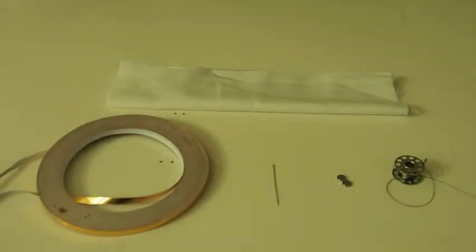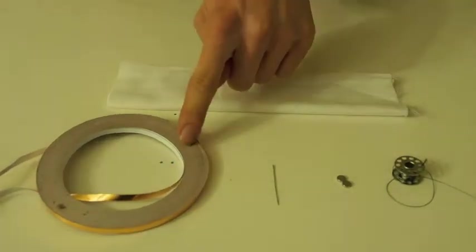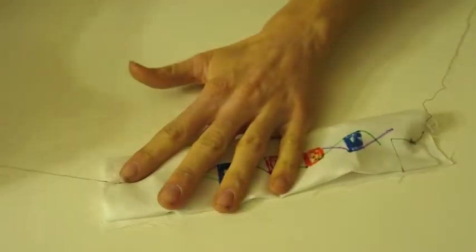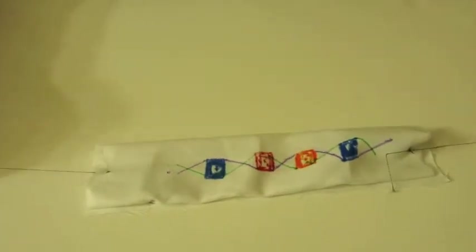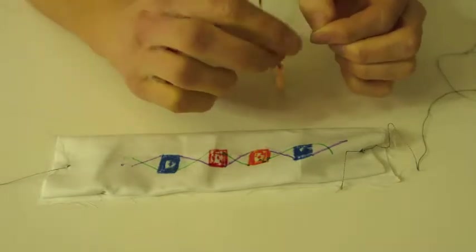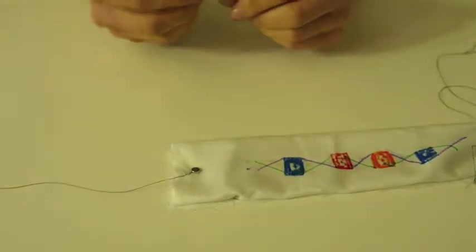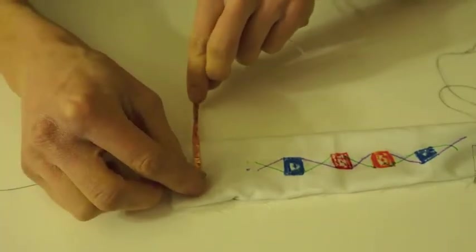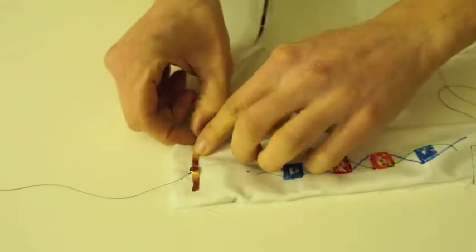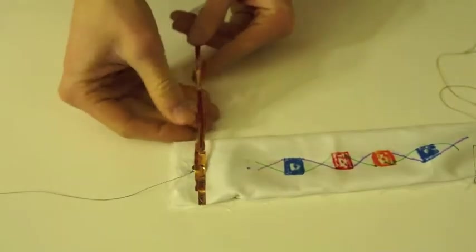Next, you're going to need conductive thread, your magnets, a sewing needle, some copper tape, and your bracelet. Take one of your magnets and stick it on one end of your fabric, on the top part of your fabric. Take some copper tape and tape it down. Take your long strand of copper tape and begin wrapping it around your bracelet. Keep doing so until you have good coverage on one end of your bracelet. Just remember, you need to do this on both ends so use your tape sparingly.